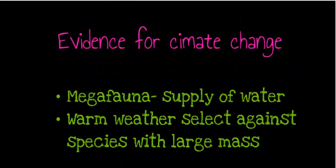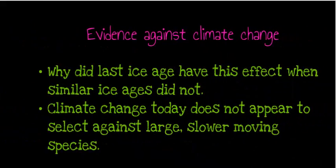Evidence supporting climate change includes the extinction of megafauna, thought to have occurred through lack of water supply and warm weather selecting against species with large mass. However, evidence against climate change raises the question of why the last ice age had this effect when similar ice ages did not, and why large slow-moving megafauna still exist in Africa today where climate change also continues.